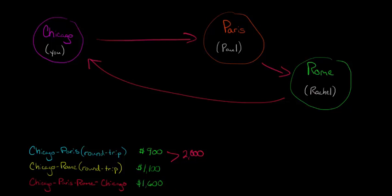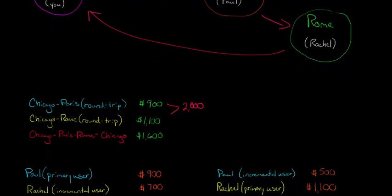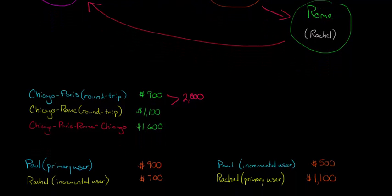Well, we talked about with the incremental allocation method, we had said that we were going to designate someone a primary user. And let's say that Paul was the primary user. Then Paul, we were going to allocate all the cost of the standalone to him, the $900.